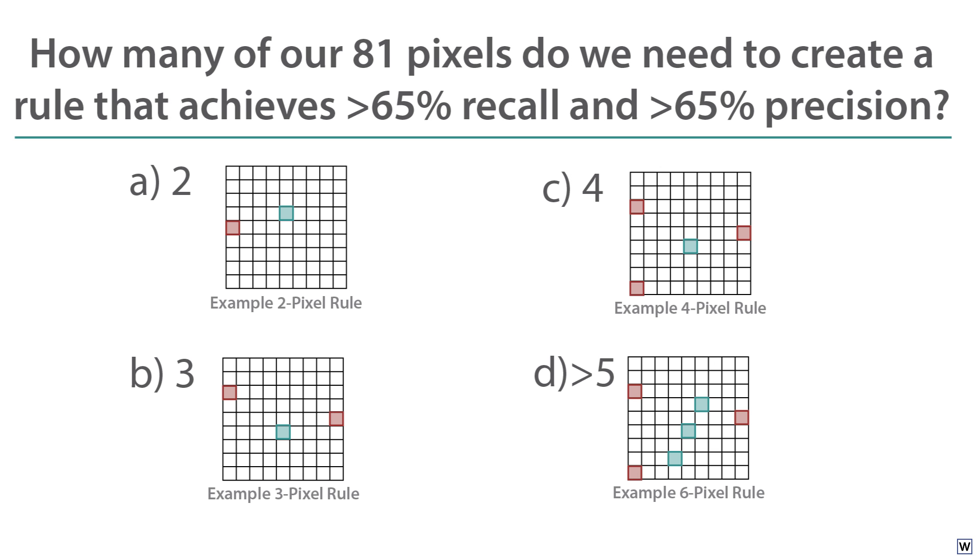That is, we catch 65% or more of all fingers in our testing set, and 65% or more of our finger predictions are correct. Next time, we'll figure out how complex of a rule we need to really start learning what fingers look like.